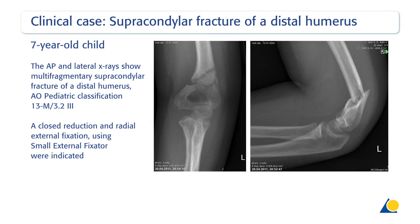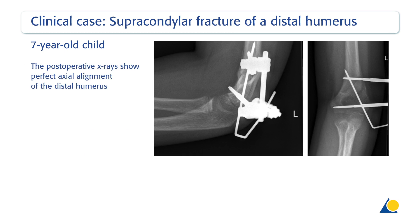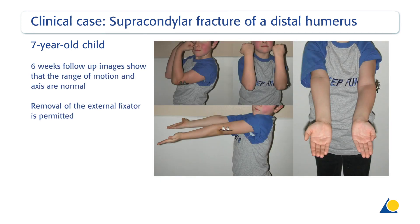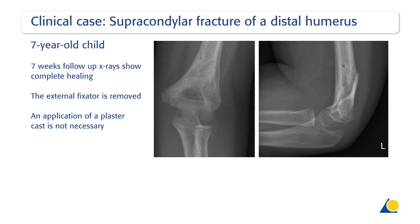In this case, a 7-year-old child fell from a tree. The AP and lateral x-rays show a multifragmentary supracondylar fracture of the distal humerus, AO-Pediatric classification 13-M-3.2-3. This unstable fracture could not be managed using a K-wire fixation technique; a closed reduction and radial external fixation using the small external fixator were indicated. The post-operative x-rays show perfect axial alignment. At 6-weeks follow-up, range of motion and axis are normal and removal of the external fixator is permitted. The 7-weeks follow-up x-rays show complete healing; application of a plaster cast is not necessary.